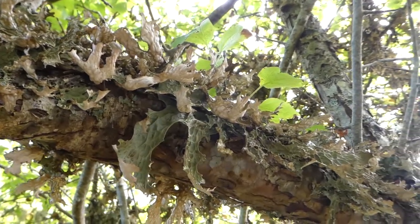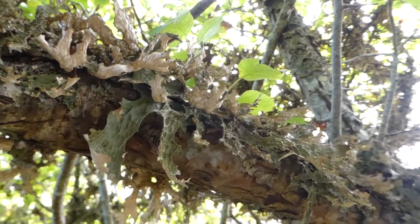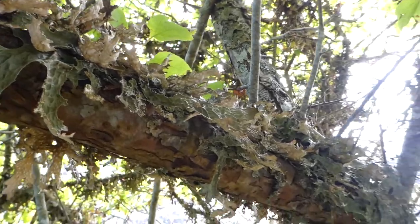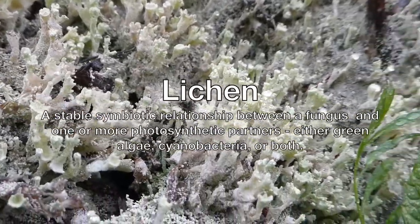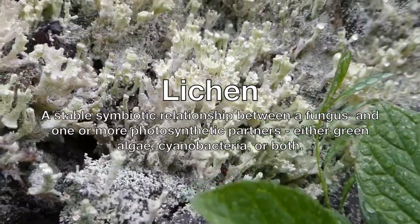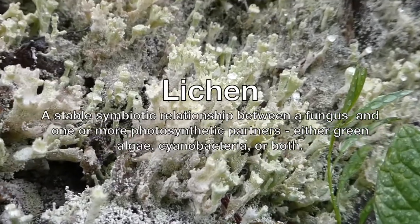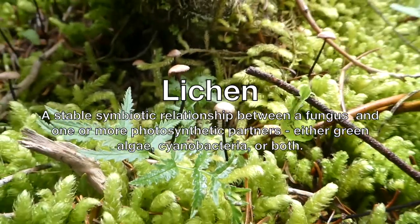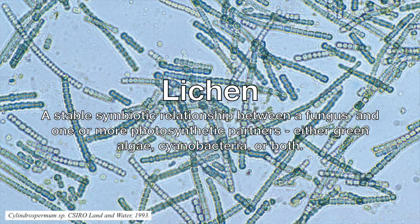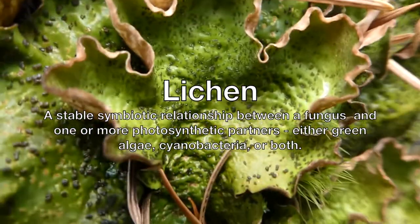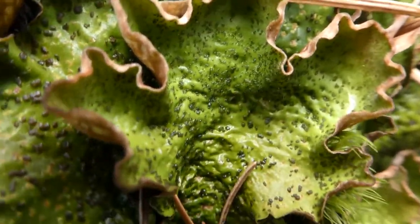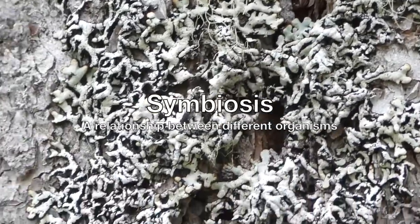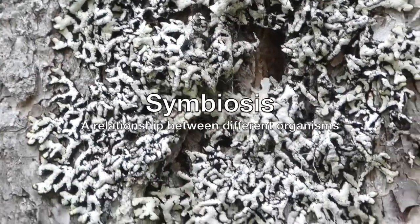Lichen is a wastebasket term for relationships between very different organisms that blur the lines of what we typically think of as an individual. The traditional definition of a lichen is that it's a stable symbiotic relationship between a fungus and one or more photosynthetic partners — either algae, cyanobacteria, or both. A symbiosis is simply a relationship between different organisms; it's not necessarily good or bad.